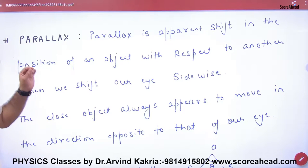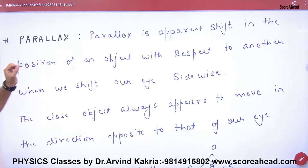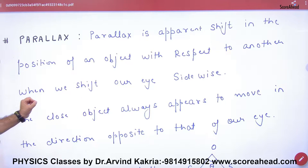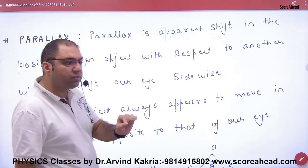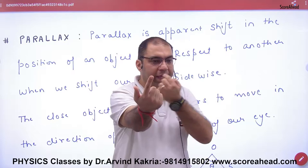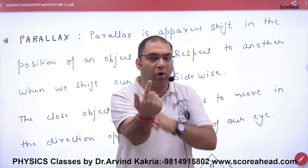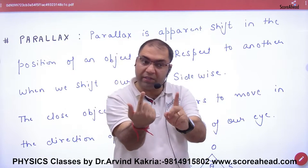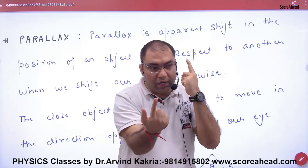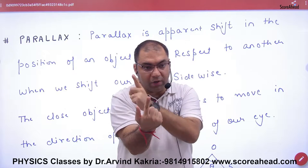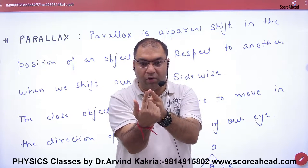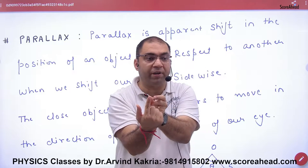Parallax is the apparent shift in the position of an object with respect to another when we shift our eye sideways. As a simple demonstration: this is a finger — my left eye sees it from here and my right eye sees it from here. This difference in viewing position is called the parallax angle.